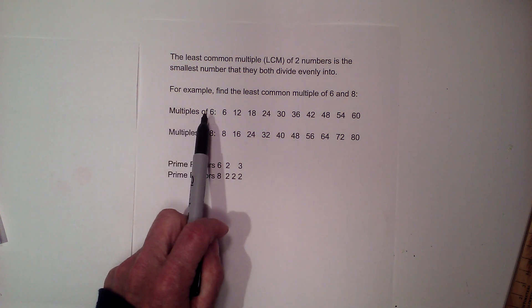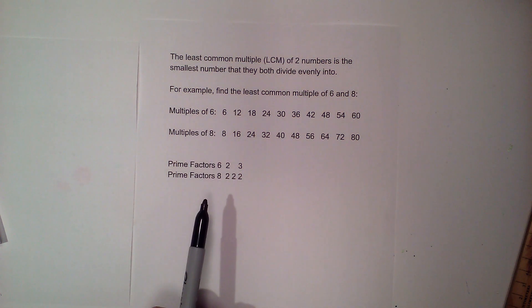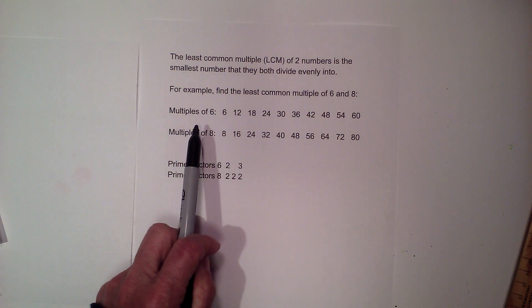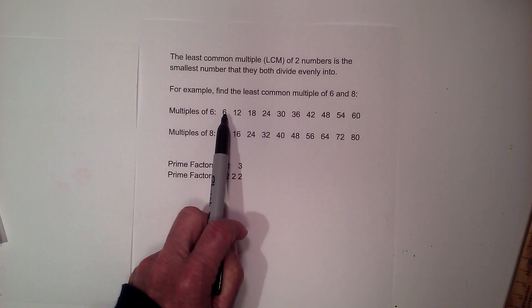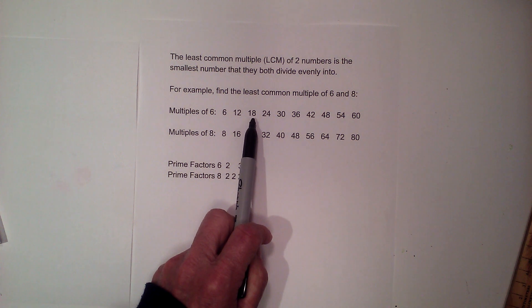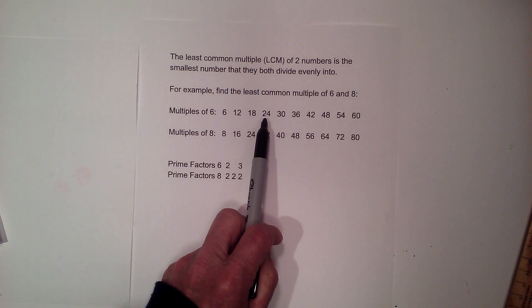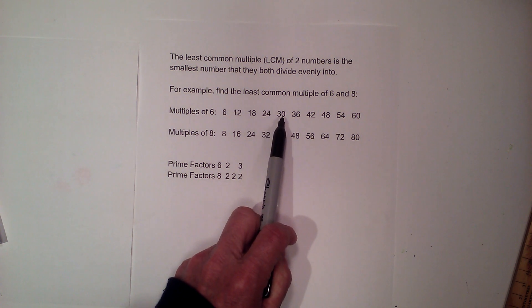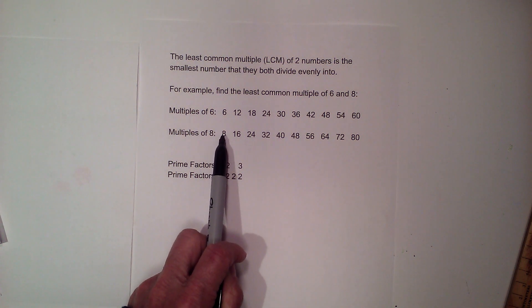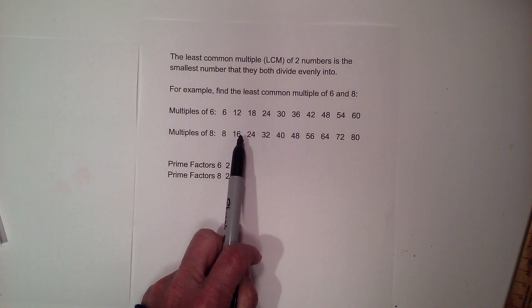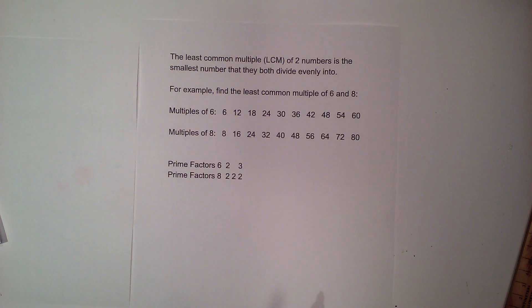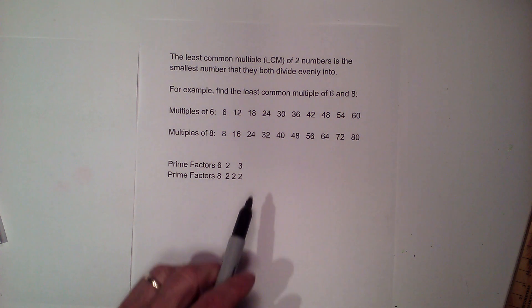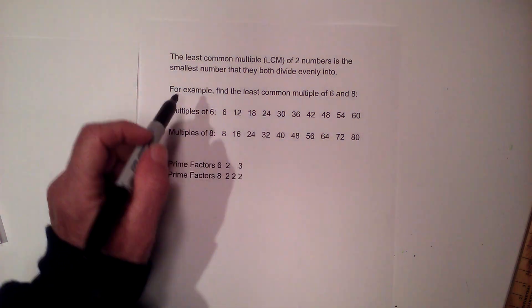For the first technique, we have six and eight, and we're trying to find the LCM. So what you do is you write out the multiples of six: six times one is six, times two is twelve, times three is eighteen, times four is twenty-four, etc. And the same here, eight times one is eight, eight times two is sixteen, twenty-four, thirty-two, forty.